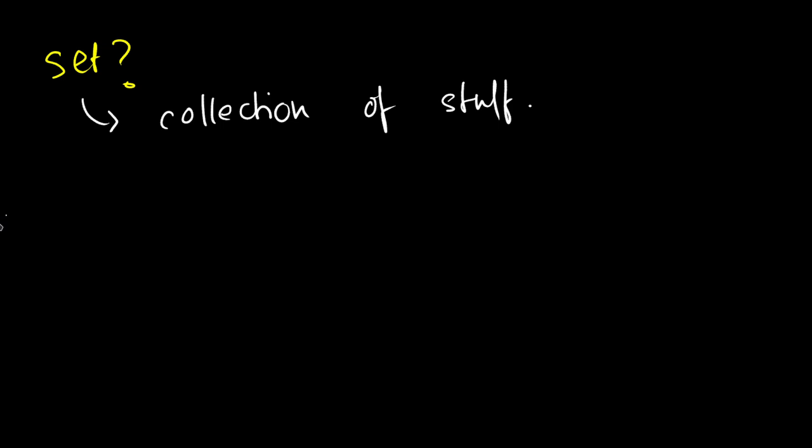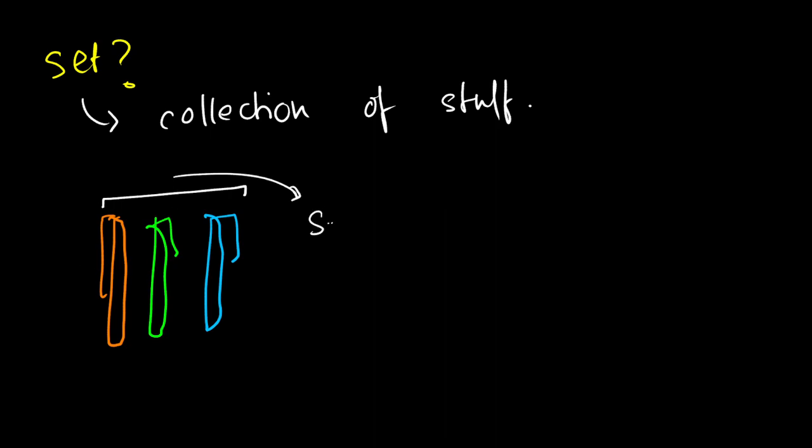All right, now I don't understand this, Nibir, what are you talking about? So let me give an example. Let us suppose we have three pens - pen one, pen two, and let's take another color, pen three. All right, the collection of these three pens can be called a set. And similarly, the collection of every single person in this world can also be called a set.